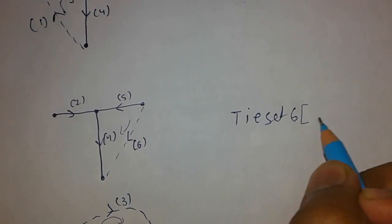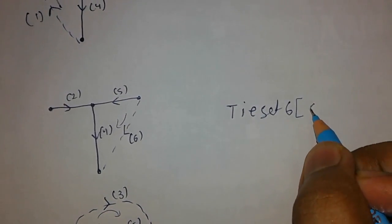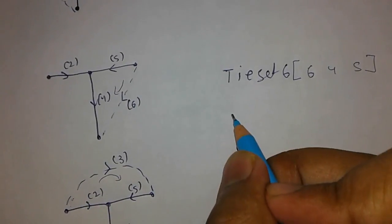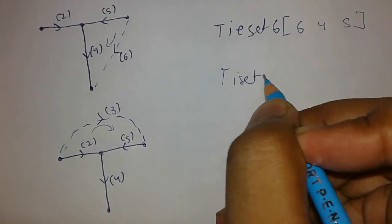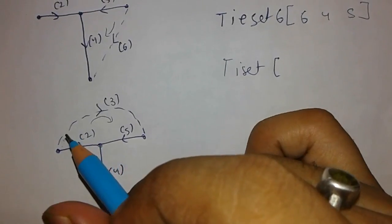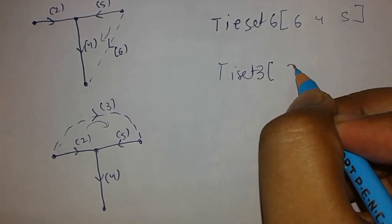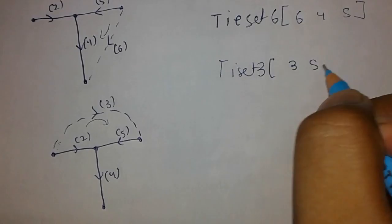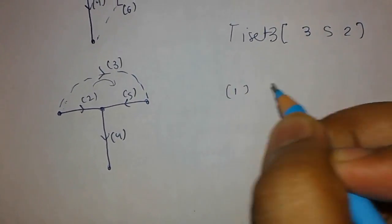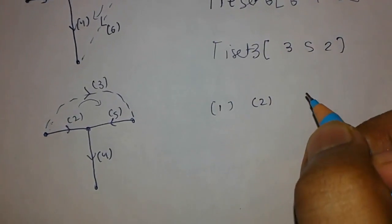What you have to keep in mind when forming the main matrix: for tie set three, I am connecting three to get tie set three, which is three, five, two. Now we have to construct our original tie set matrix.